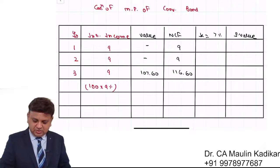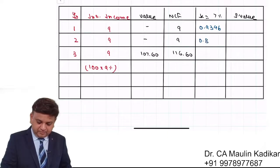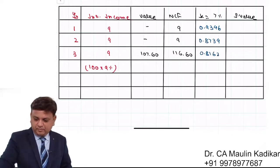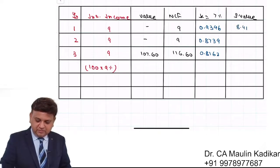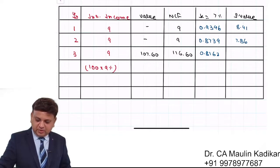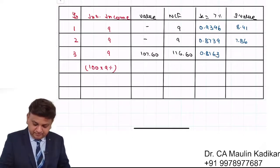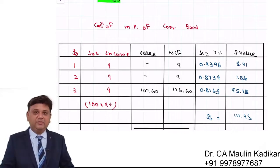Cash flows are discounted at 7%. Year 1 discount factor: 0.9346; Year 2 factor: 0.8734; Year 3 factor: 0.8163. Calculation: £9 × 0.9346 = £8.41; £9 × 0.8734 = £7.86; £116.6 × 0.8163 = £95.18. Total P0 = £111.45. That is the market price of the convertible bond.